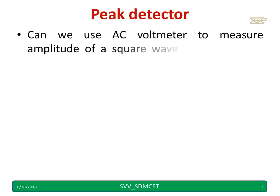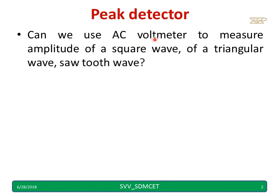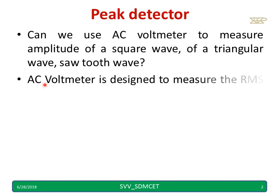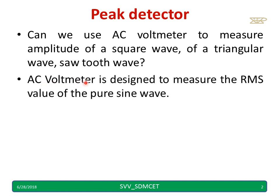Can we use an AC voltmeter to measure the amplitude of a square wave, a triangular wave, or a sawtooth wave? No. AC voltmeters are basically designed to measure the RMS value of a true sine wave. This should be remembered.